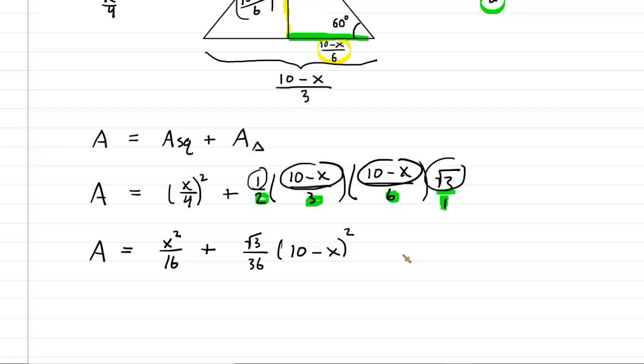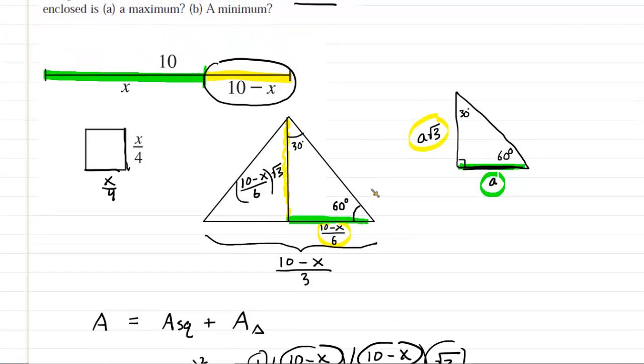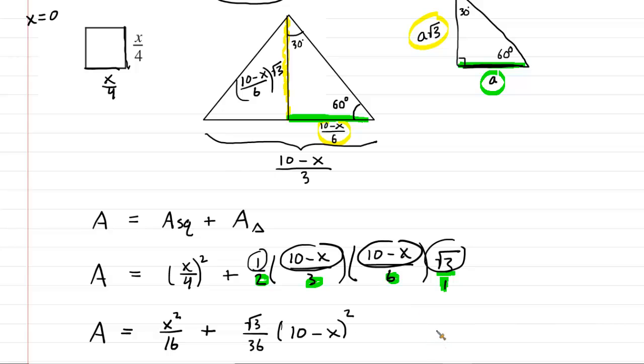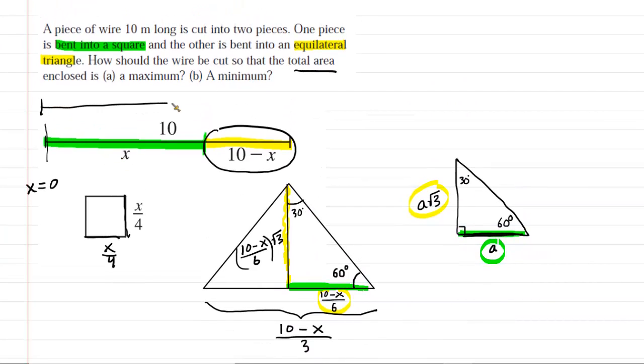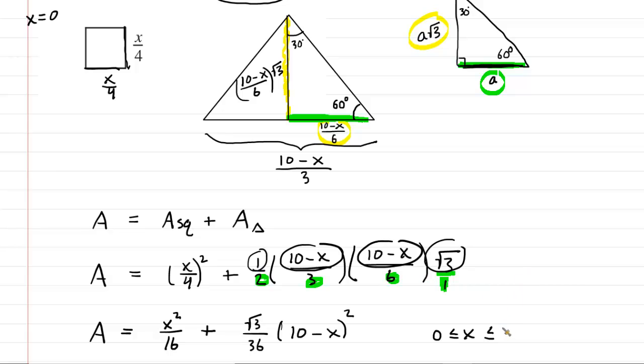We might want to note the values of x that would make sense in the context of the problem. So one lower bound for x would be 0. If you imagine x equals 0, that would simply mean that we don't make a cut at all. We would sort of make the cut at the far left end of the wire, but that would be no cut at all. So we know that x is bounded by 0. And then it's also bounded by 10, if you think about it, because the entire length of the wire is 10. We certainly couldn't make any cut beyond 10 because there would be no wire there to even cut. So the upper bound of x would be 10.